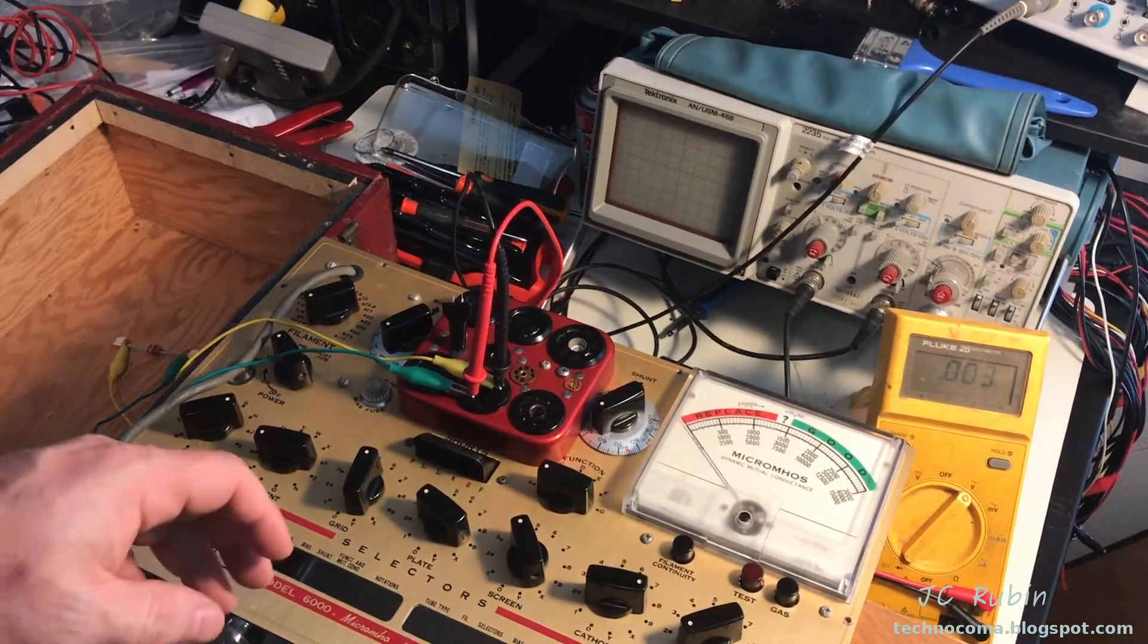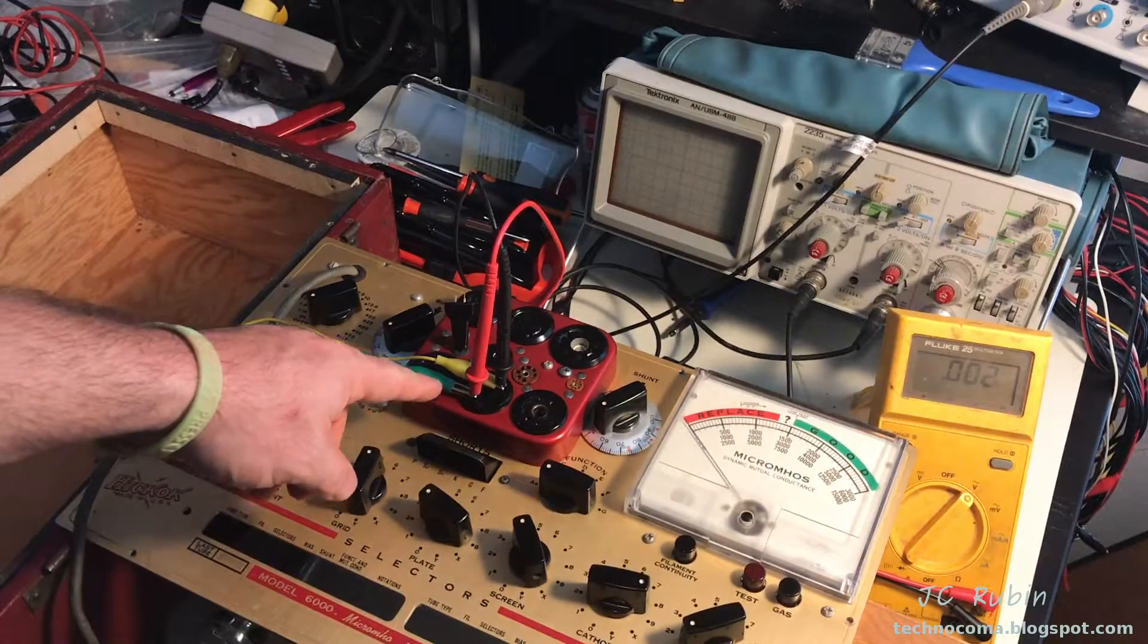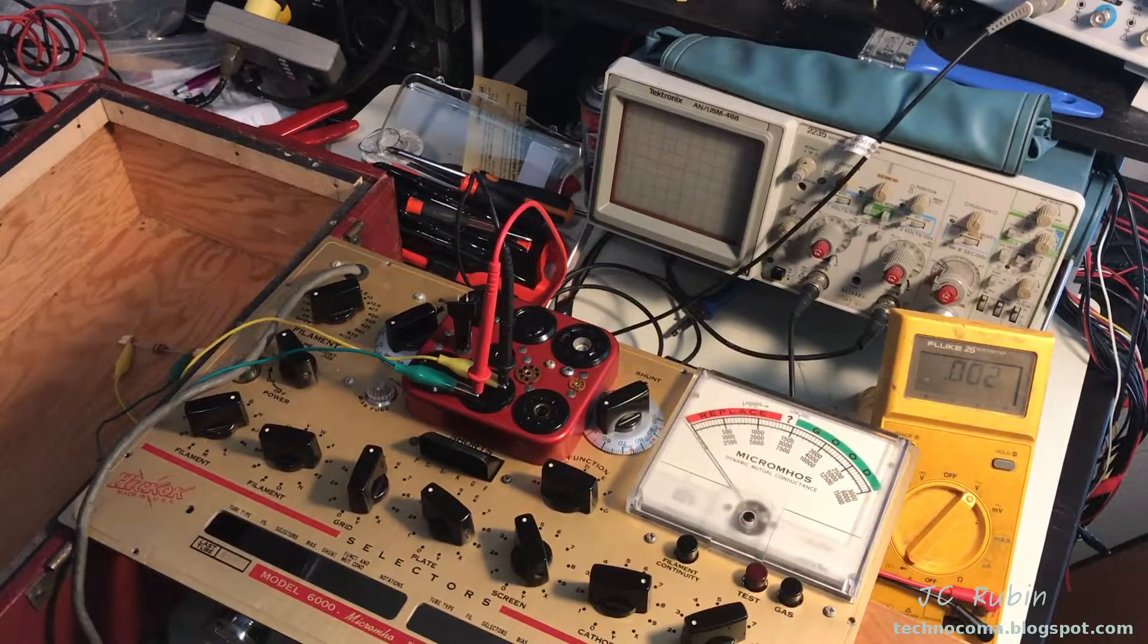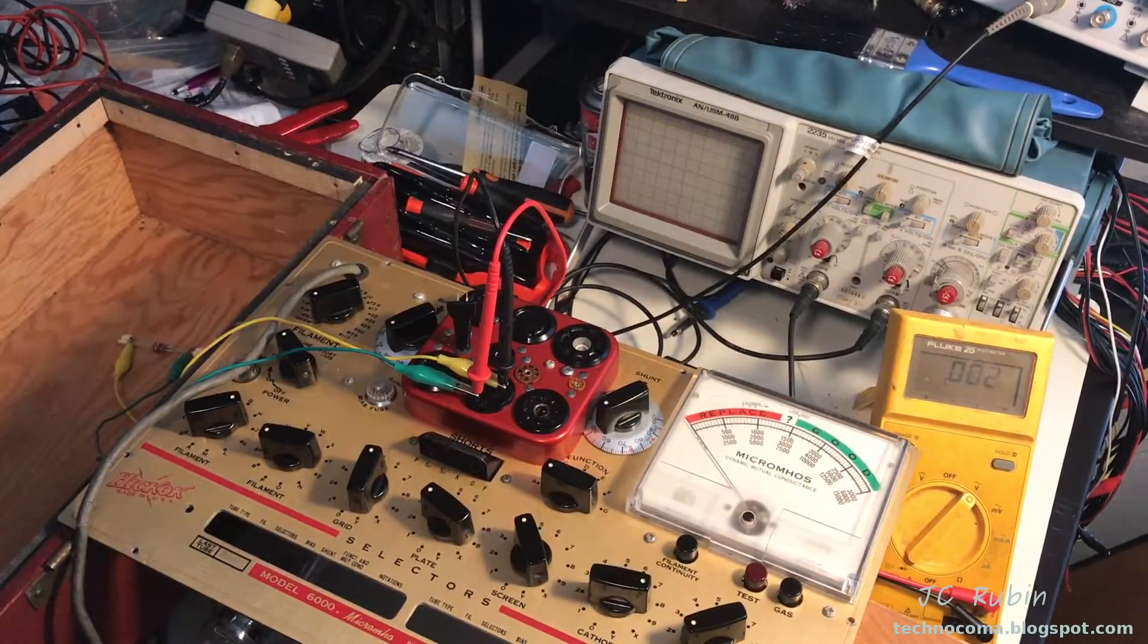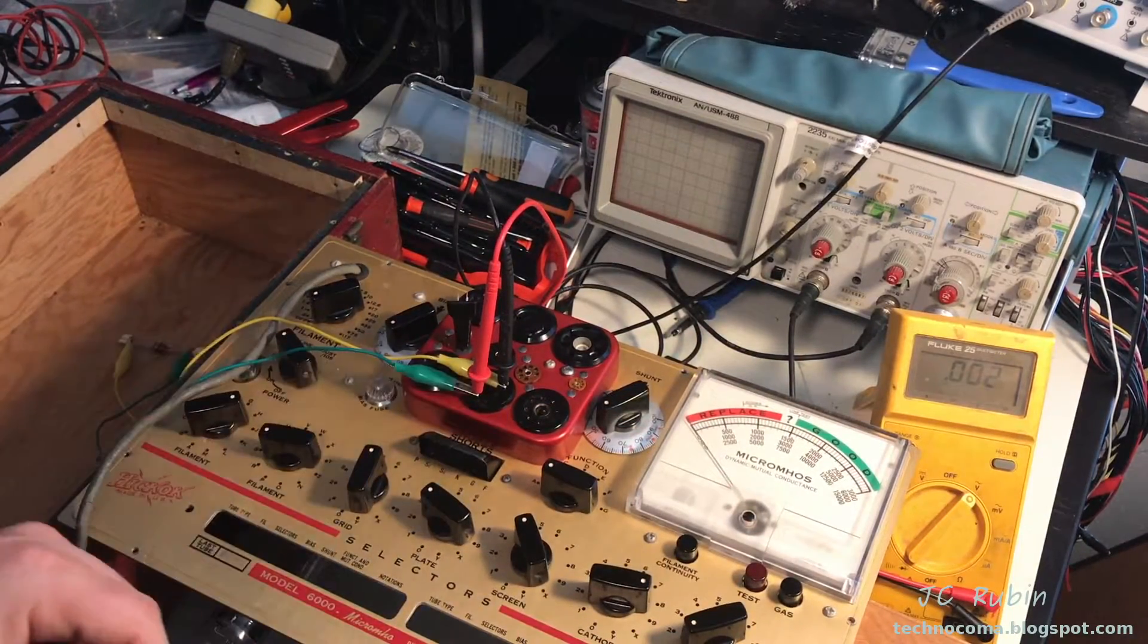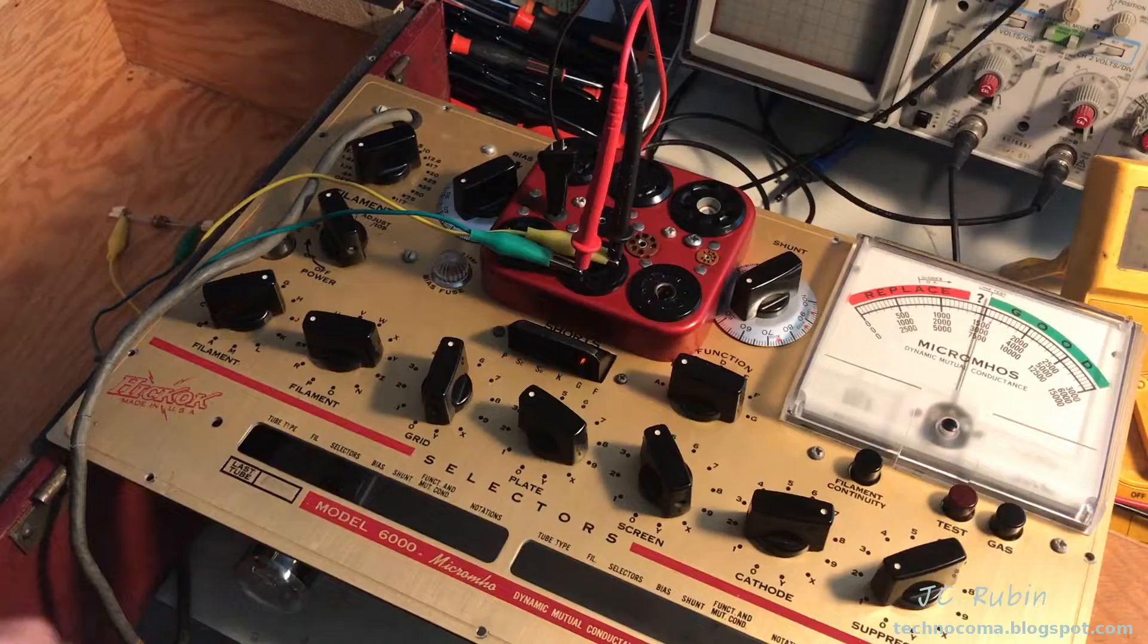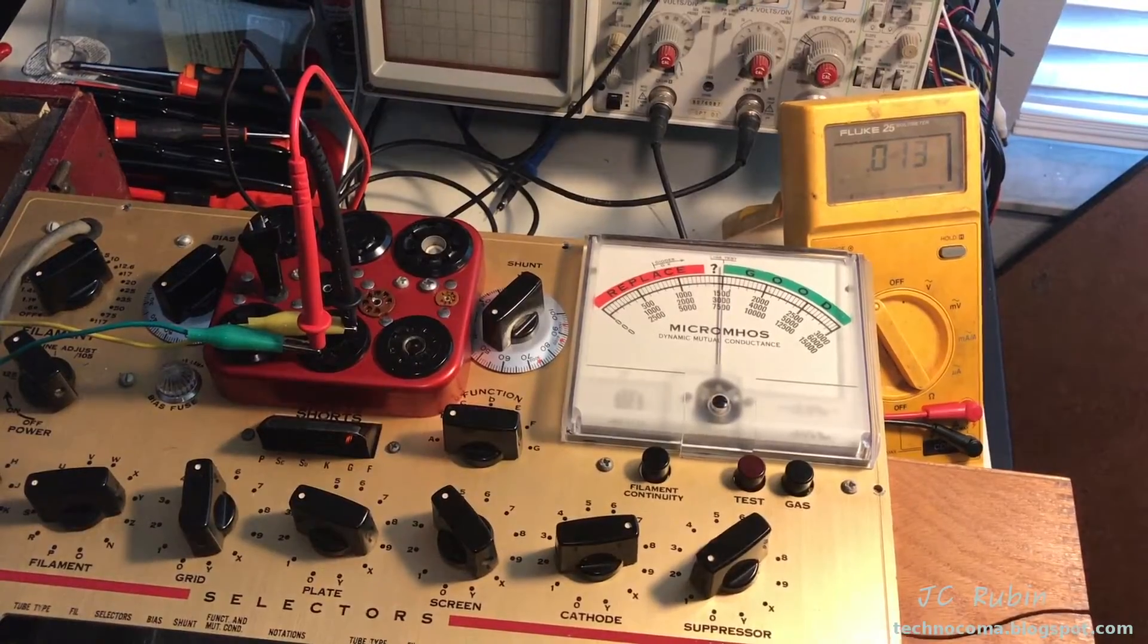Before we turn anything on, I just want to talk about the layout. We can see the probes are going directly into three and eight for our next test. We could also see that we have these alligator clips making their way down to the shunt in the box. This brings us to our next test, a test of the plate voltage on pins three and eight. We should expect that when we hit the test button we should see a value of 150 volts plus or minus three volts.